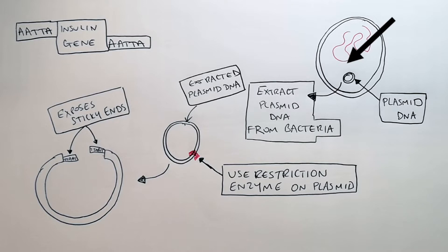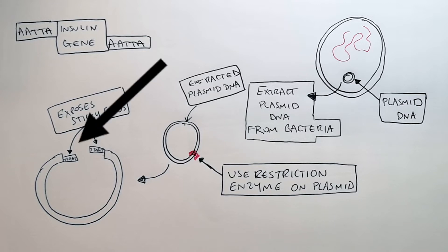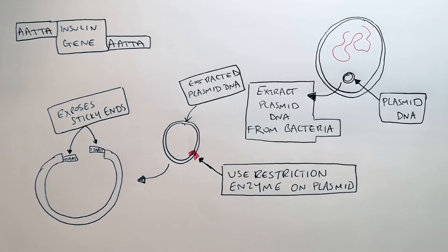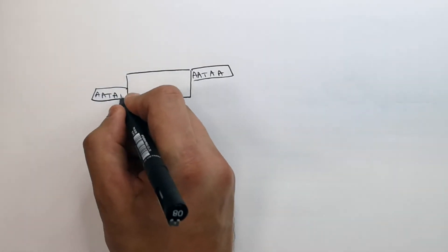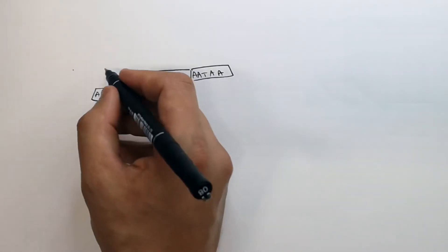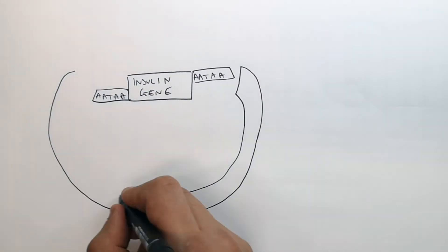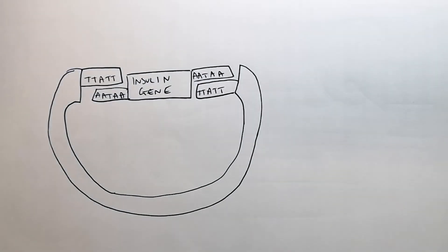So to recap: we get the bacterial cell, we remove the plasmid DNA from the bacteria, then use restriction enzymes to cut the DNA of the plasmid exposing sticky ends, which are unpaired bases. So we've now got our insulin gene — our target gene — with sticky ends, and we've got the plasmid DNA.